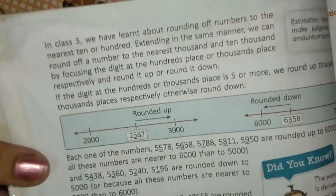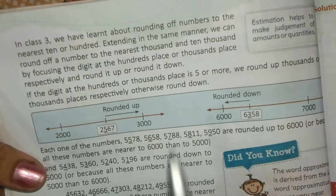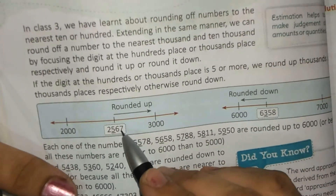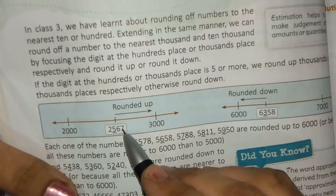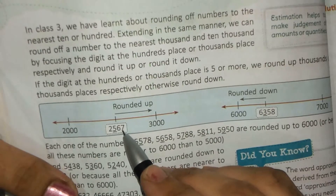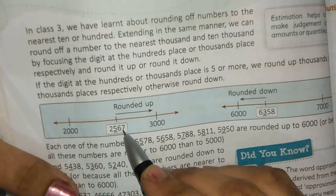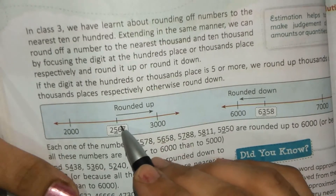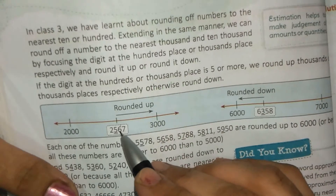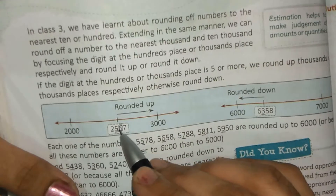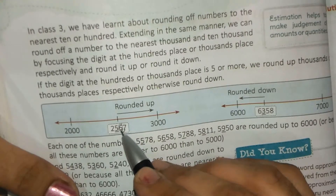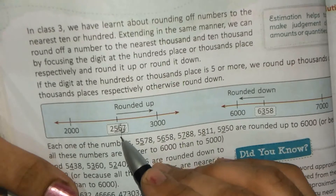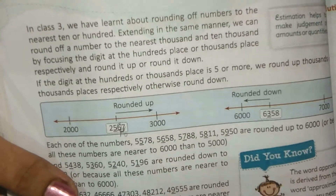Round off means rounding any number. If we look at it, the ones place is the ones place, and the nearest by the tens place is the nearest place. The nearest tens place is 6, so 6 is the first digit.